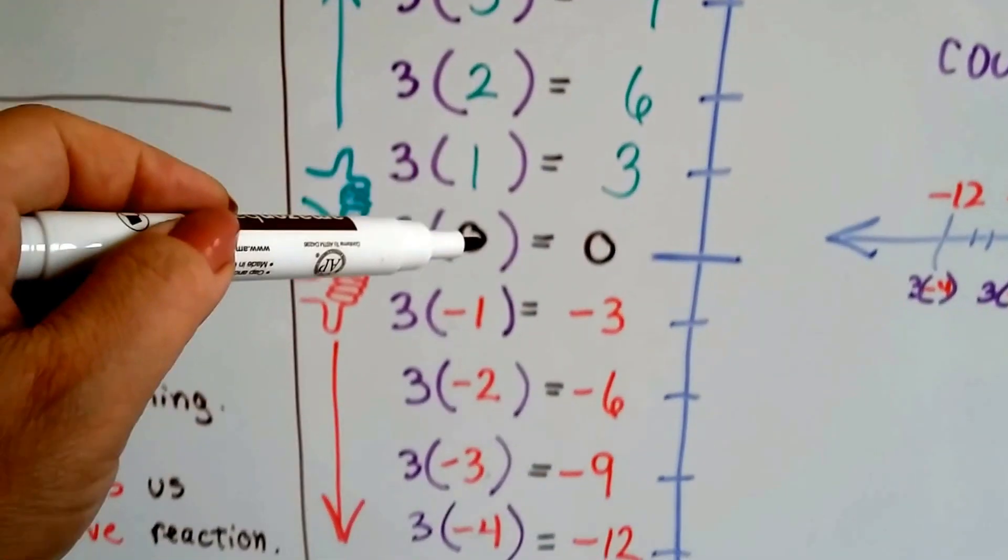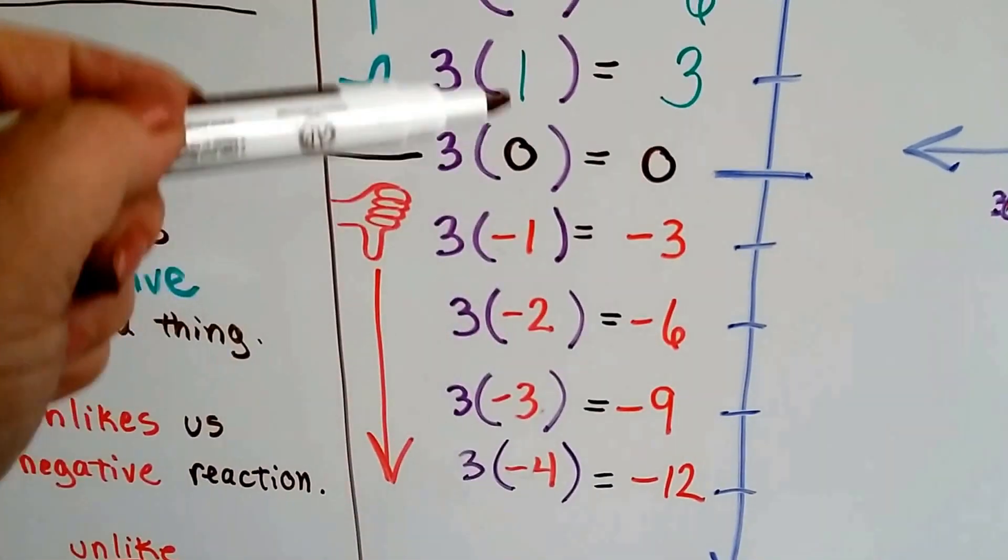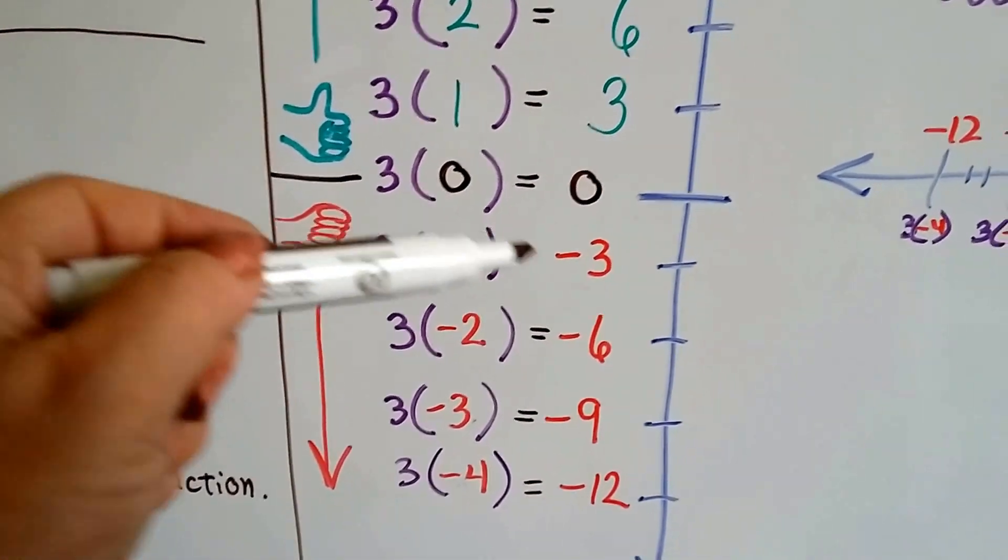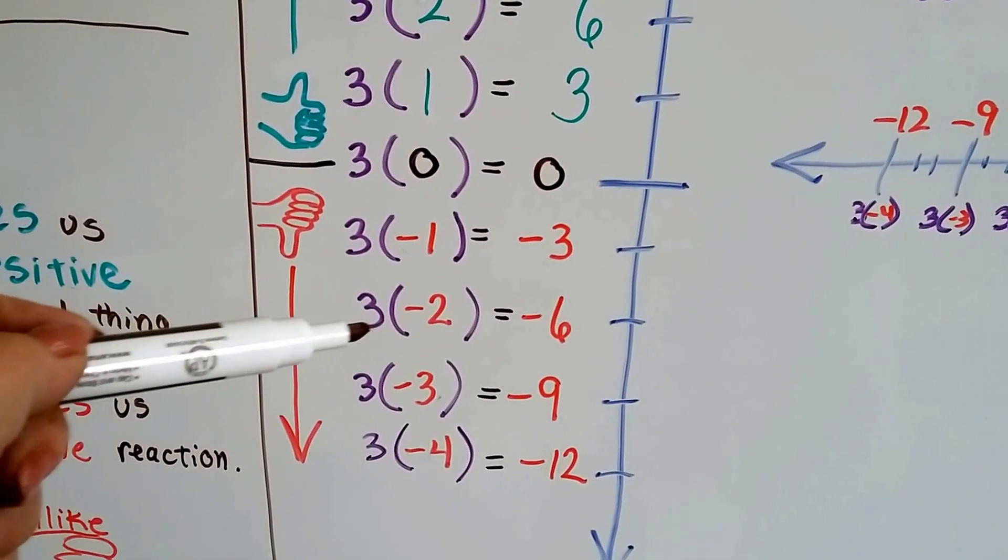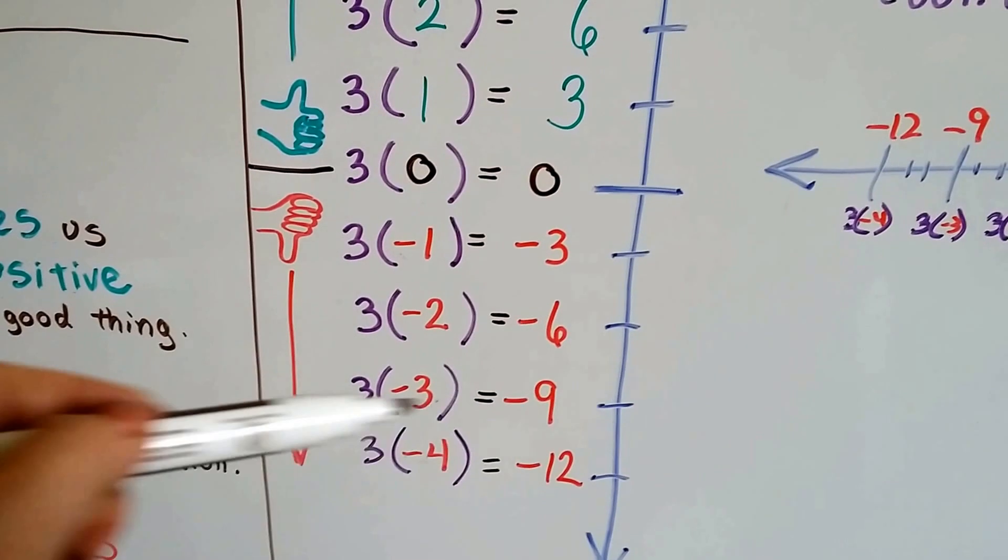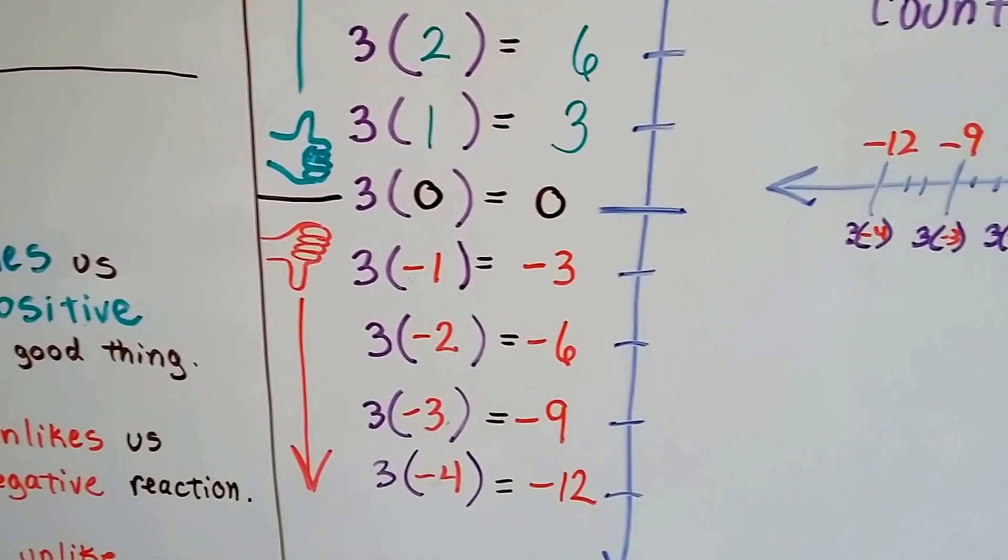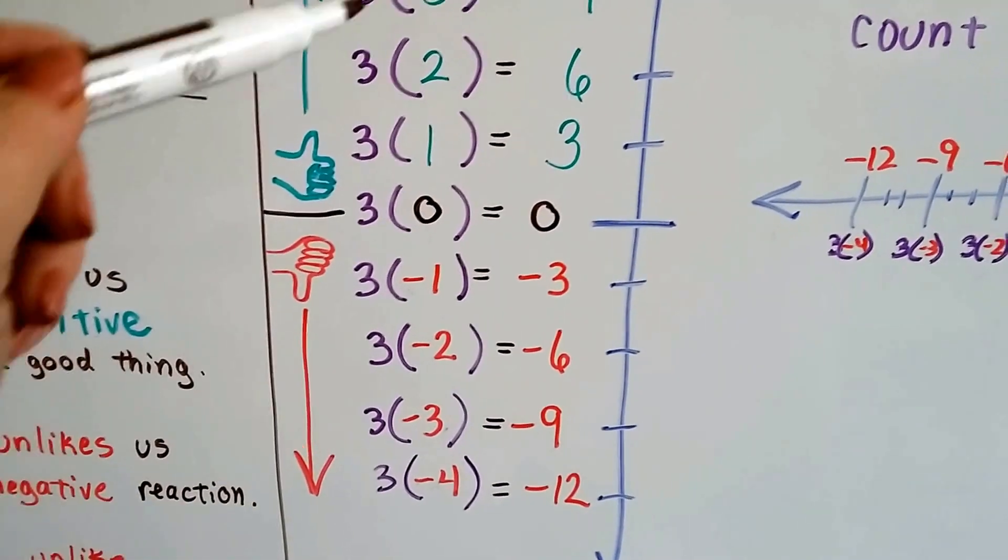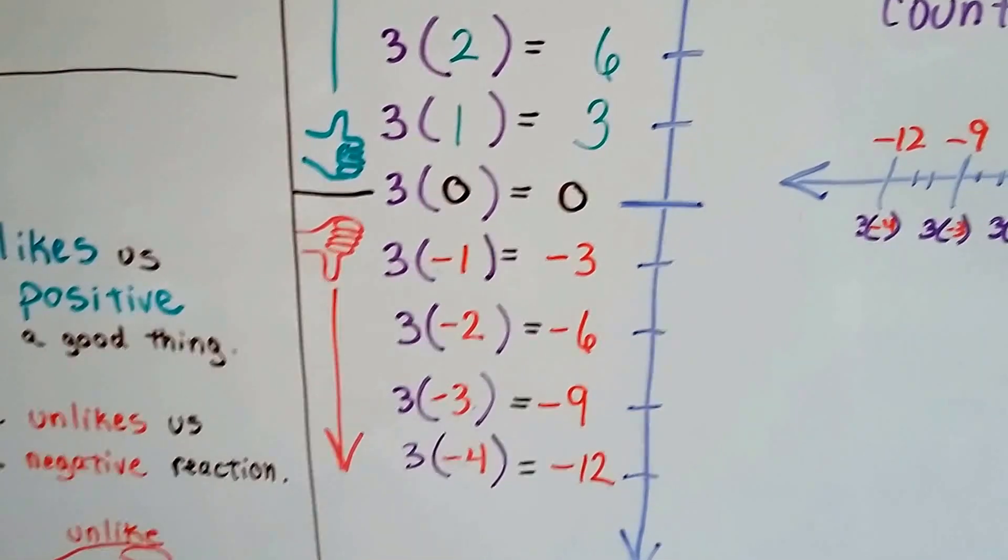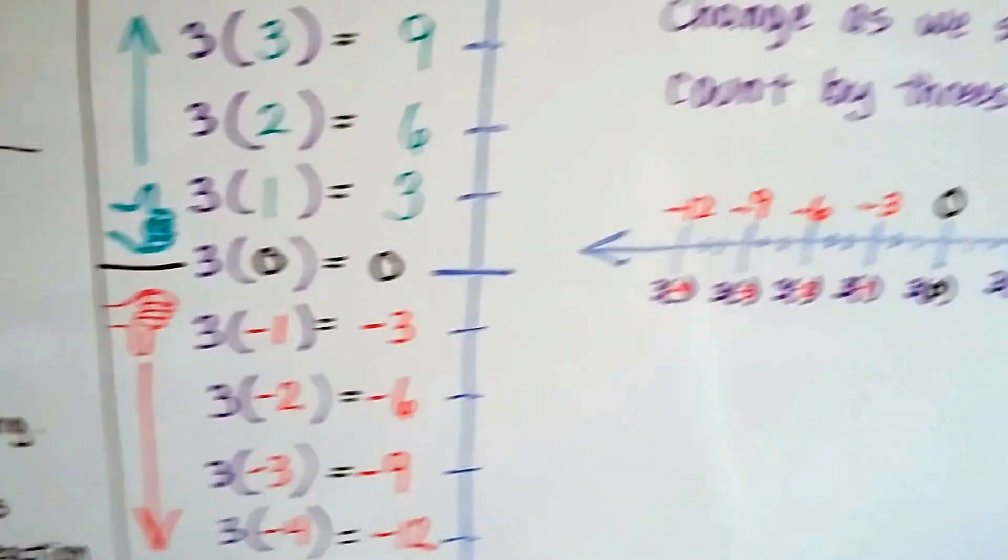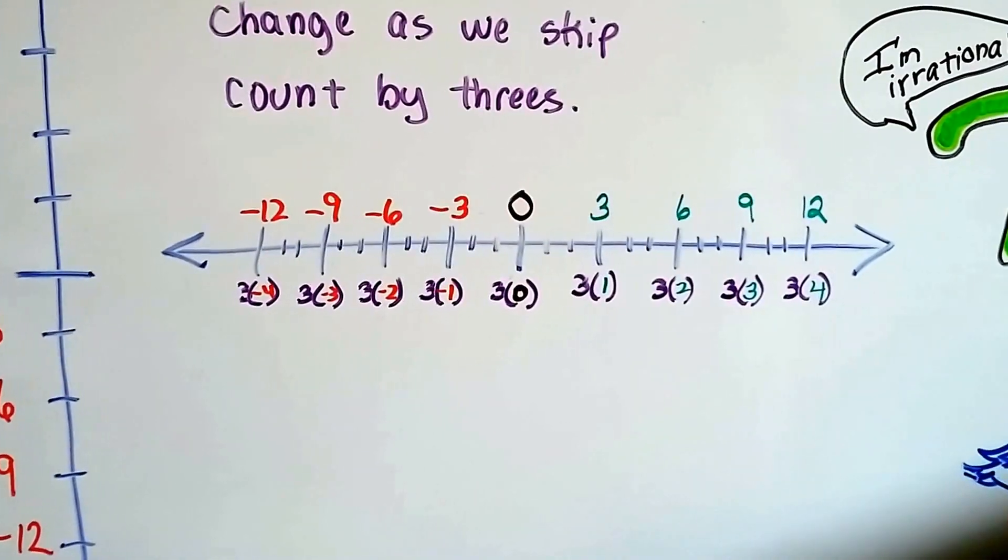See, the numbers are going 4, 3, 2, 1, 0, negative 1, negative 2, negative 3, negative 4 in order. So 3 times a negative 1 is going to jump us to a negative 3. 3 times a negative 2 is going to jump us to the negative 6. So up here is a like and down here is unlike. These are like positive signs. These are unlike, a positive 3 and a negative 2.